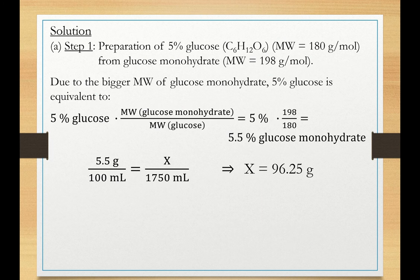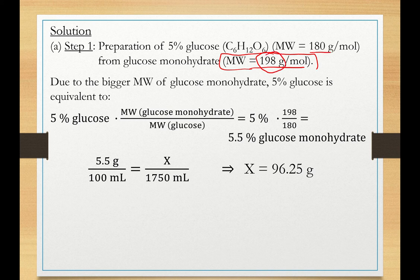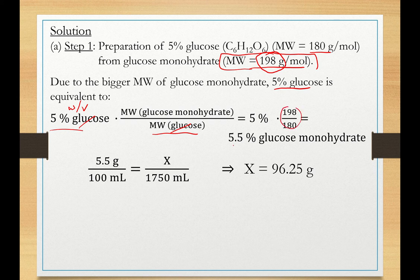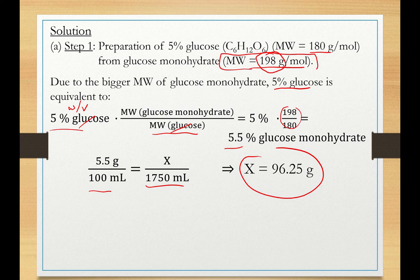Since glucose monohydrate has a higher molecular weight than glucose — 198 g/mol vs. 180 g/mol — we convert 5% glucose to glucose monohydrate by multiplying: 5% × (198/180) = 5.5% w/v glucose monohydrate. In 100 ml there are 5.5 grams, so for 1750 ml we need 96.25 grams of glucose monohydrate.